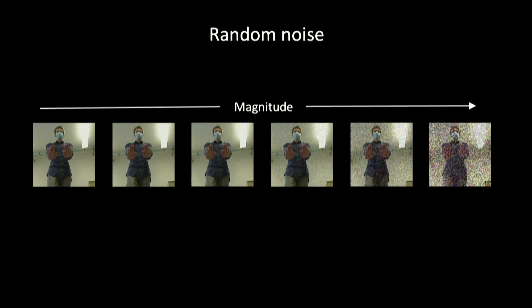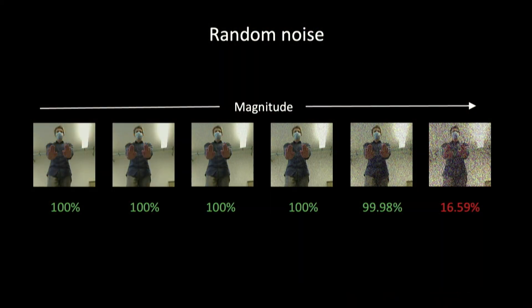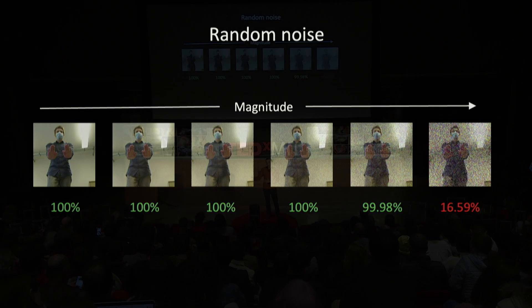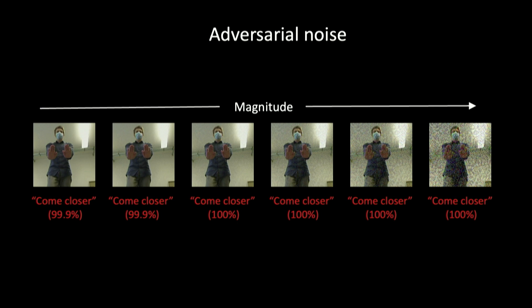Let's visualize this. We have the image from before with different magnitudes of random noise applied. When we ask the AI to classify these images, we see it's actually quite robust — up to the second-highest noise magnitude, the network achieves 99% or 100% accuracy. Only at the very highest magnitude level does performance degrade. This really shows us that neural networks are quite robust to random noise. But when we replace random noise with adversarial noise and repeat the same experiment, we see misclassification happening already at very low noise magnitudes — the network can be fooled by perturbations that are invisible to the human eye.